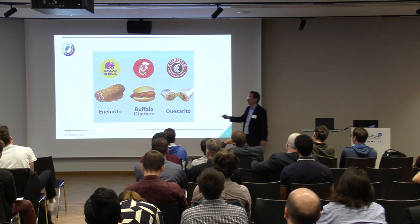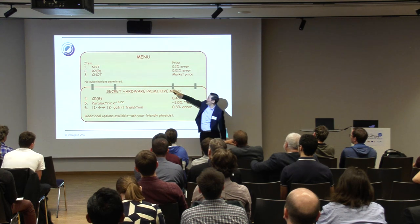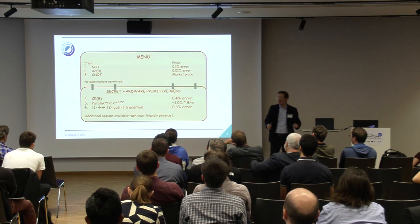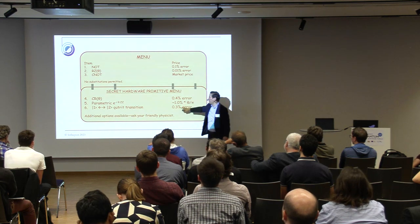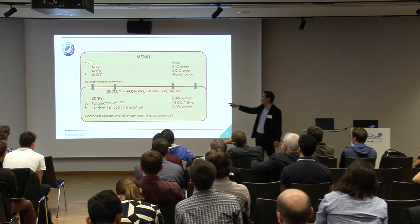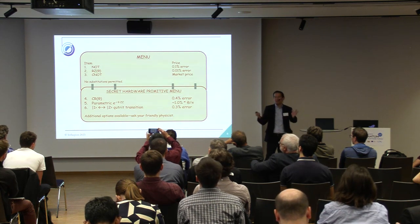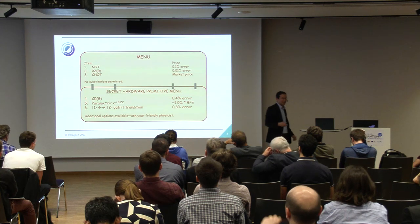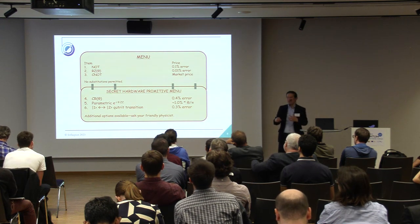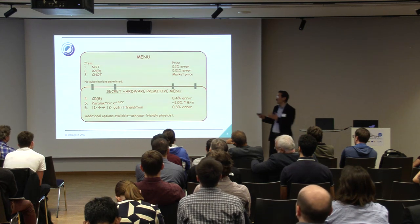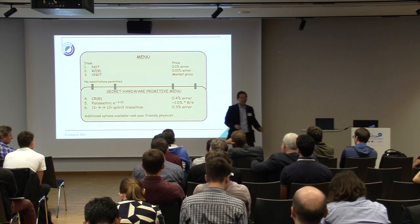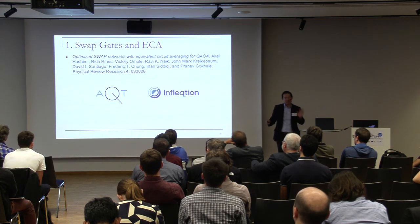Similarly, we typically see a menu like CNOT, some RZ rotation, maybe a NOT gate. But looking down at the machines themselves, we can have a parameterized cross-resonance gate, a parameterized Mølmer–Sørensen gate, or qutrits — we heard a little about qutrits today from a poster and some talks. These are all things we can use if we expend the effort to create a back-end for each machine and be very specific about it, as we've done in our Inflection product, with substantial gains.